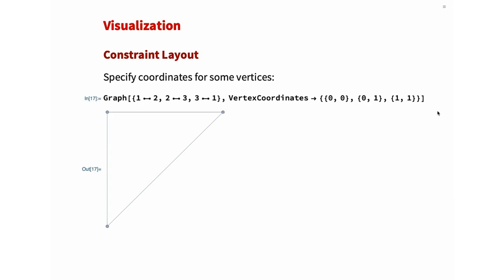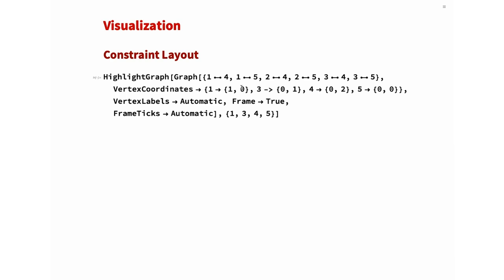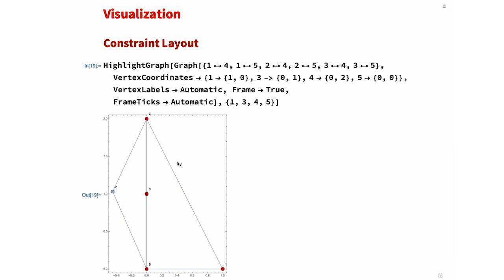Next is constraint layout or coordinate. When you draw graphs, you can manually specify vertex coordinates using vertex coordinate option. Like this example, giving all coordinates for each vertex 0, 0, 1, 1, and it draws based on the given coordinate. This is how it works before, but in new version like 12.1, you don't need to specify all coordinates for each vertices. You can only specify the coordinates of vertices you want. Like this example you see, I just specify coordinate for vertex 1, 3, 4, 5, without 2.